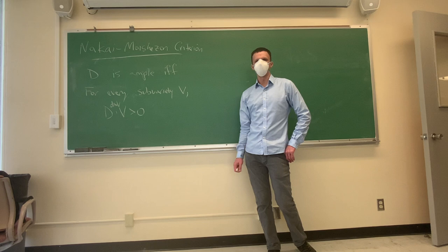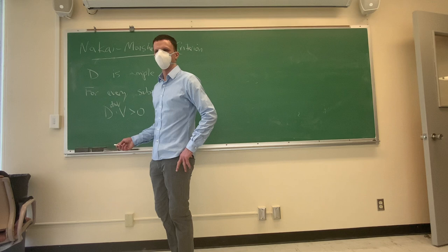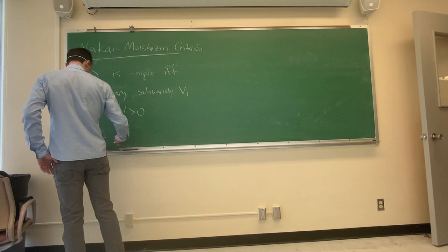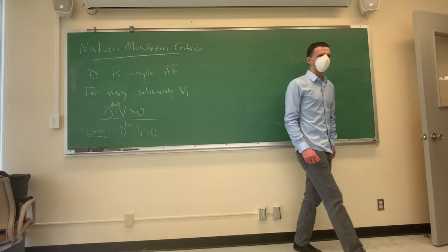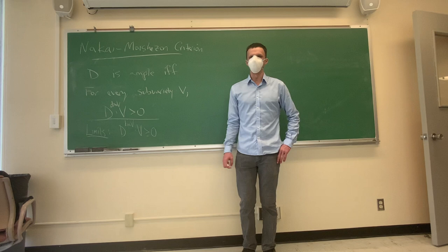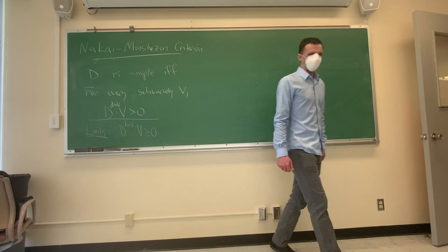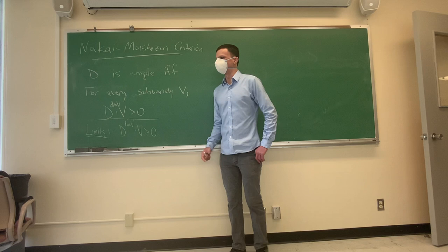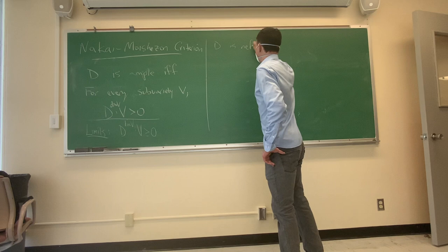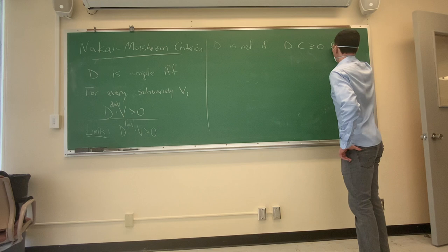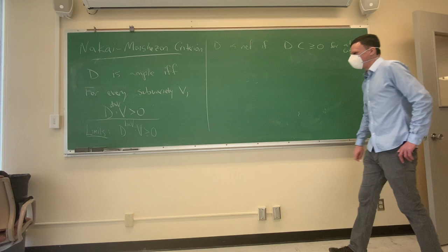The idea is that the limits of ample divisors — you just replace the greater-than symbol with greater-than-or-equal-to. So limits satisfy V to the dim V dot V is greater than or equal to zero. This numerical criterion tells you which divisors are in the closure of the cone of ample divisors. We know it's a cone. What we'll demonstrate next is that the closure of the ample cone is the nef cone, and the interior of the nef cone is the ample cone. We say that D is nef if D dot C is greater than or equal to zero for all curves.